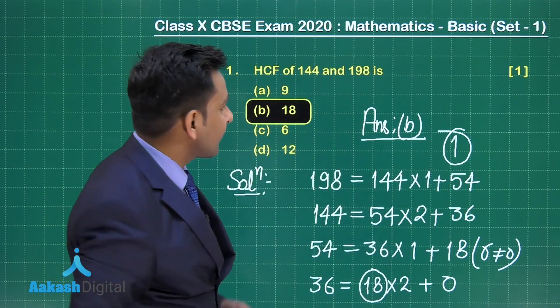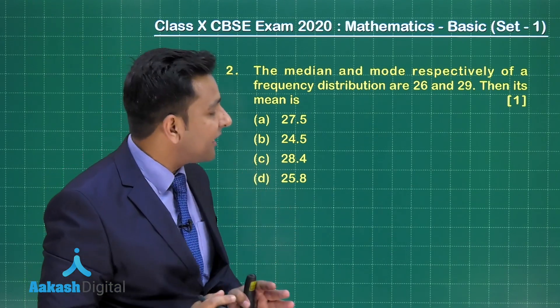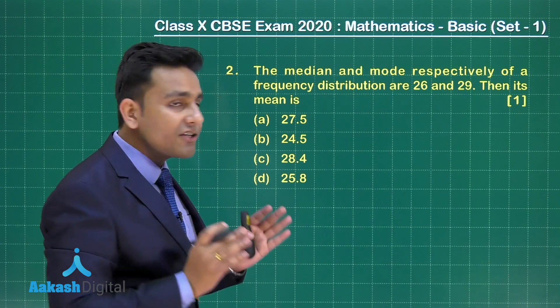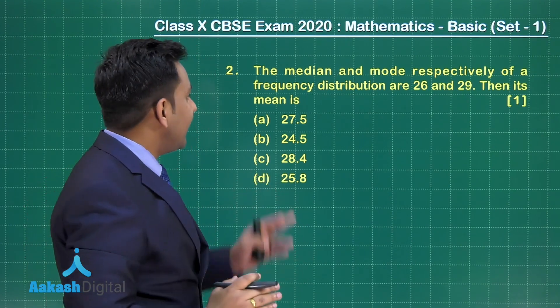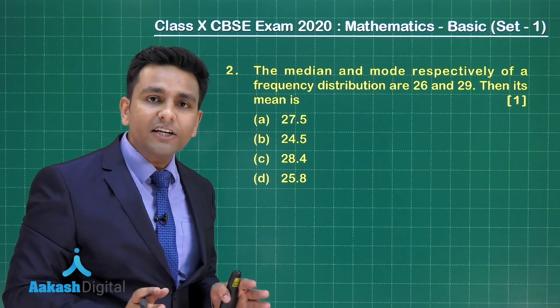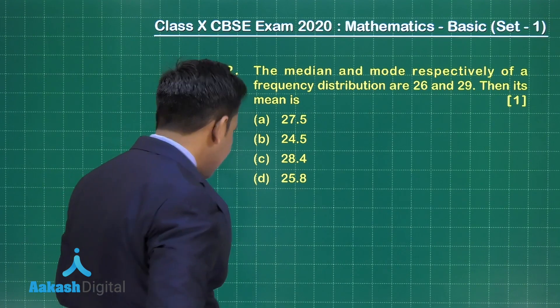Question number 2 states: the median and mode respectively of a frequency distribution are 26 and 29. Then its mean is. This question is from chapter Statistics and the topic is empirical formula. Let's solve this.